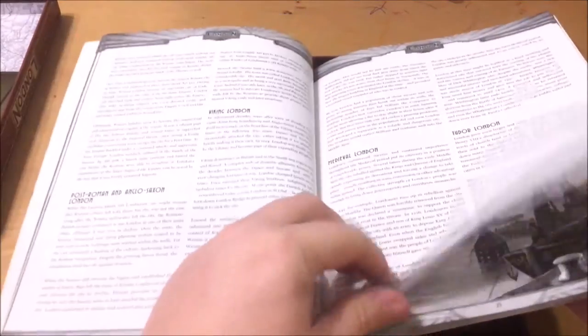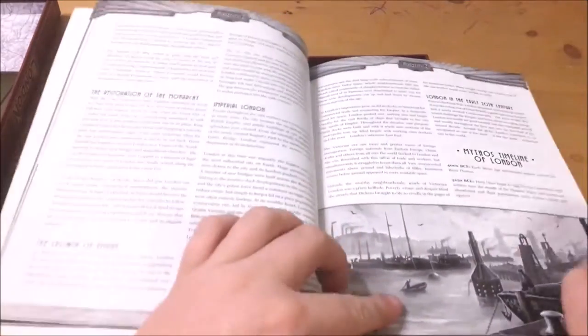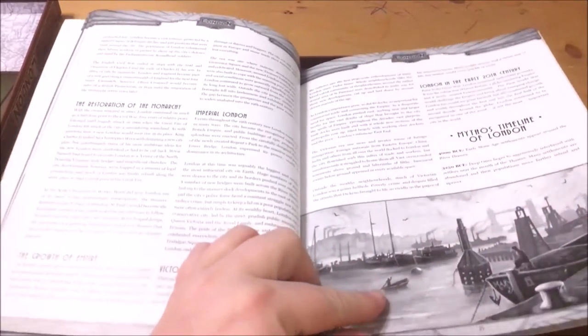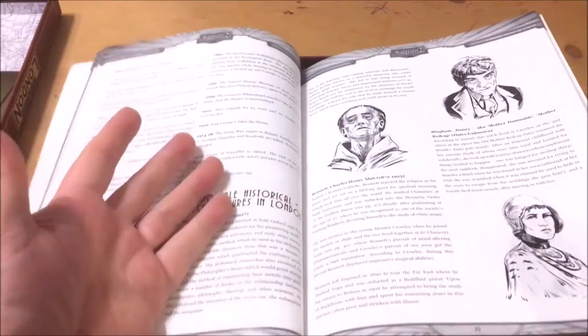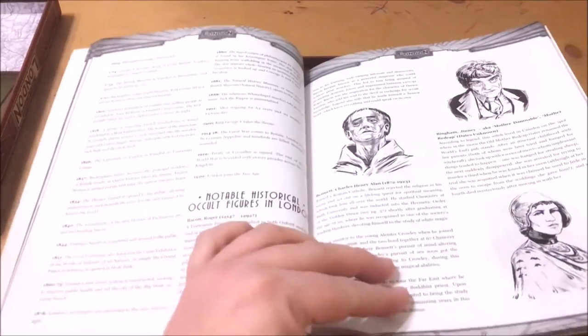We then have a very interesting mythos timeline which ties some of the historical events in with mythos events. Following that it details some early notable historical figures of London like William Blake, Aleister Crowley and Dr John Dee.